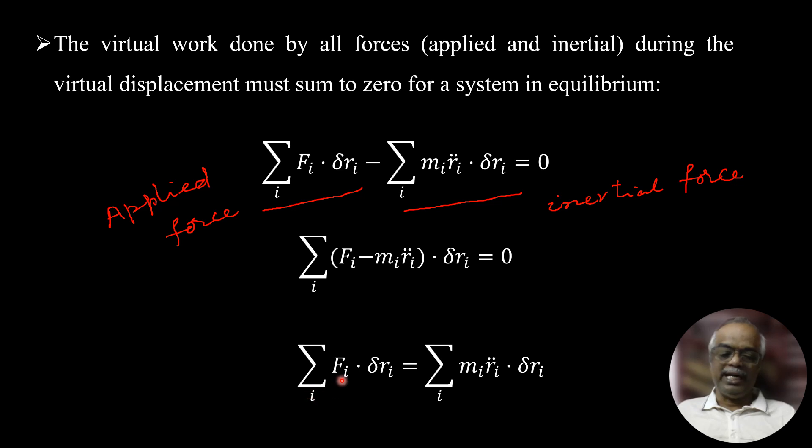This can be rewritten: summation over i F_i · δr_i is equal to summation over i m_i r̈_i · δr_i.